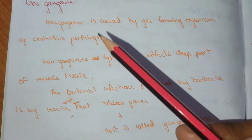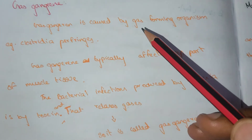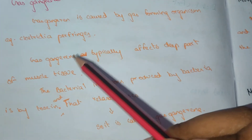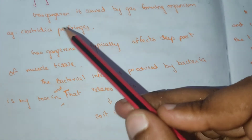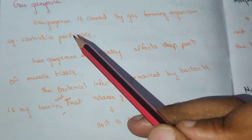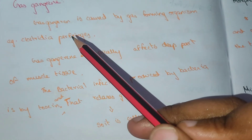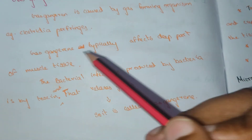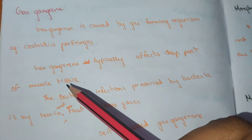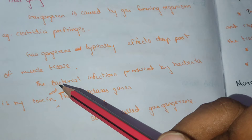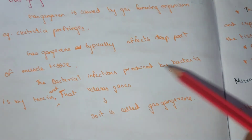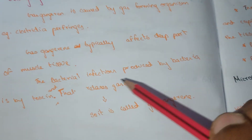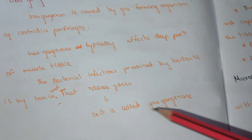Gas gangrene is caused by gas-forming organisms like Clostridium perfringens. Gas gangrene typically affects the deep parts of muscle tissue. The bacteria produce a toxin that releases gas, which is why it is called gas gangrene.